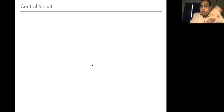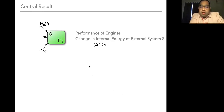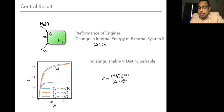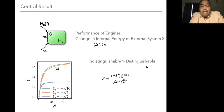The central result is the following. We are going to look at the internal energy change of the external system after one cycle and compare this change for when the engines were indistinguishable versus distinguishable bosons. When you look at the ratio of this, we generically find that this ratio is larger than one, which means indistinguishable engines tend to output more energy than distinguishable ones. That's the central result and take-home message.